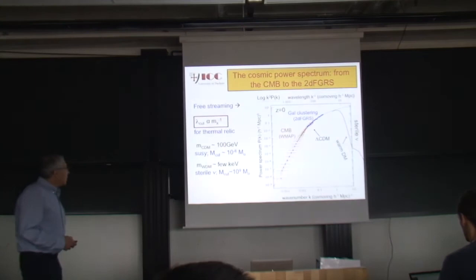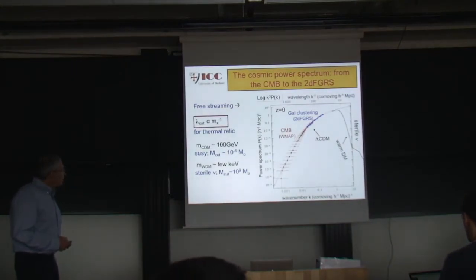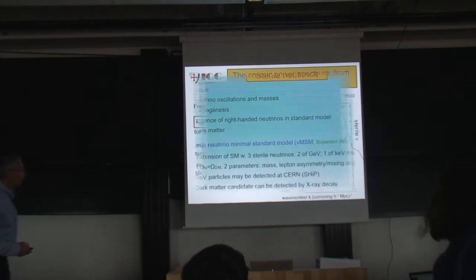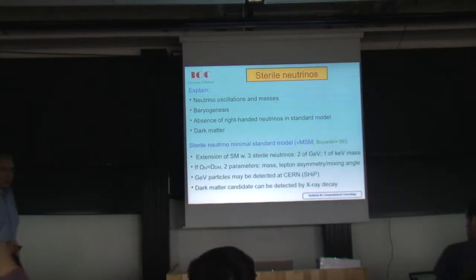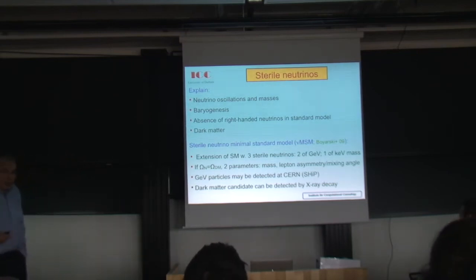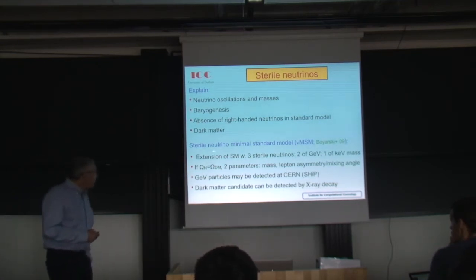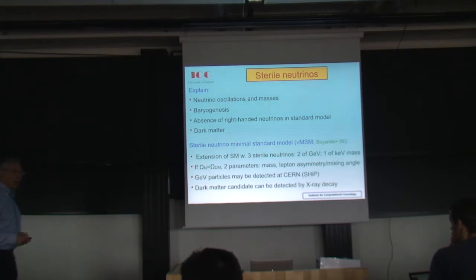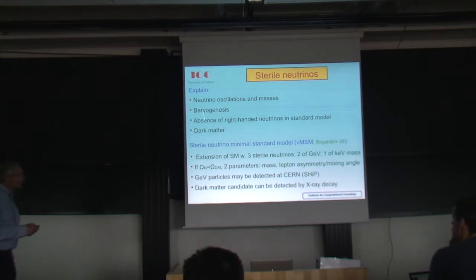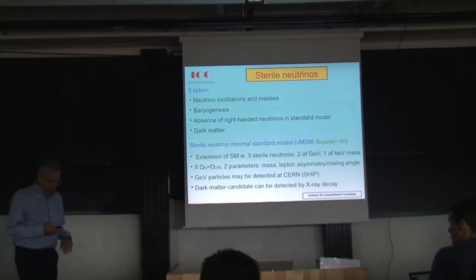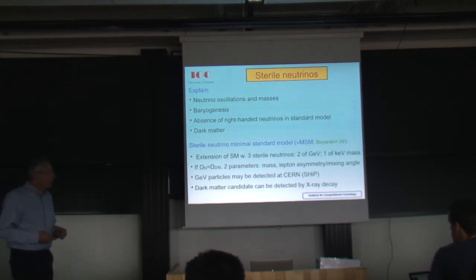These are experimental data that we need to take seriously. The relevant scales to distinguish them are the scales of dwarf galaxies and below. Sterile neutrinos may not be as familiar as WIMPs to many of you. They have good motivation from particle physics because they explain various puzzles, for example why neutrinos have mass, and they can also explain baryogenesis. There is a sterile neutrino minimal standard model by Boyarsky, Shaposhnikov, and colleagues involving three sterile neutrinos: two of GeV mass solving important particle physics problems, and one of keV mass which is tuned to be dark matter — but it's a perfectly respectable motivation from particle physics.